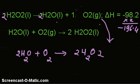And in the second step, if you reverse it, change the direction, this equation will become like this. And of course, this sign will also get changed — it will become plus 196.4.